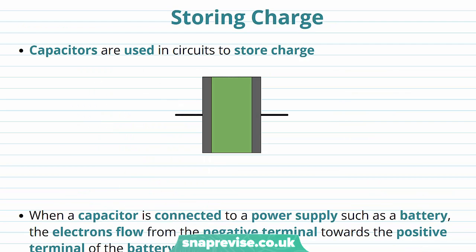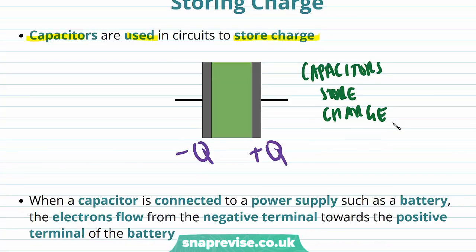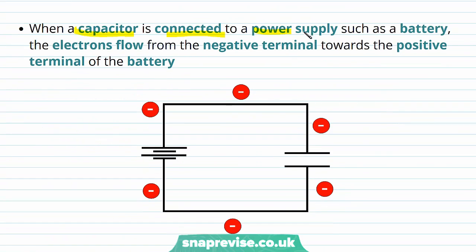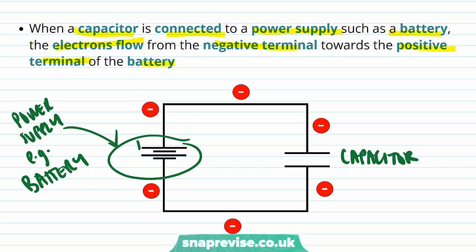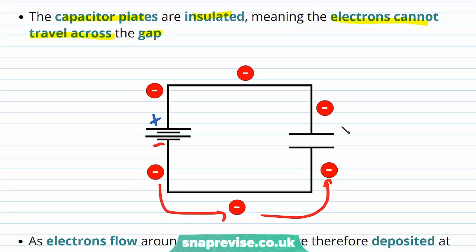We're now going to think about the function of a capacitor. Capacitors are used in circuits to store charge. One plate becomes negatively charged and the other becomes positively charged. When a capacitor is connected to a power supply such as a battery, electrons flow from the negative terminal towards the positive terminal. The capacitor plates are insulated, meaning that electrons cannot travel across the gap — the flow of electrons is impeded.